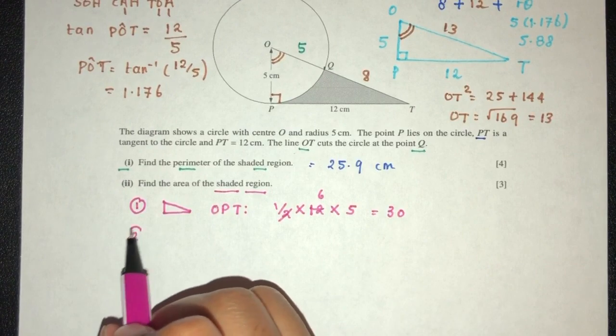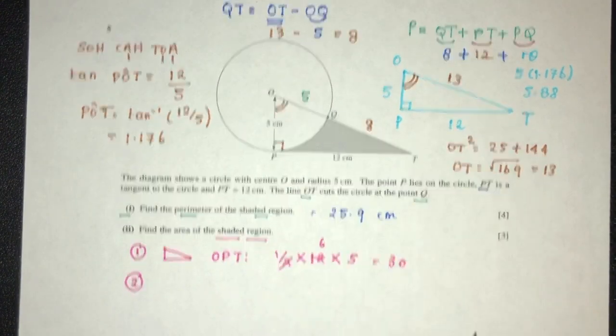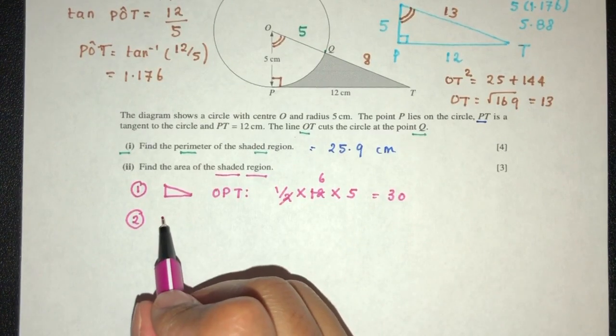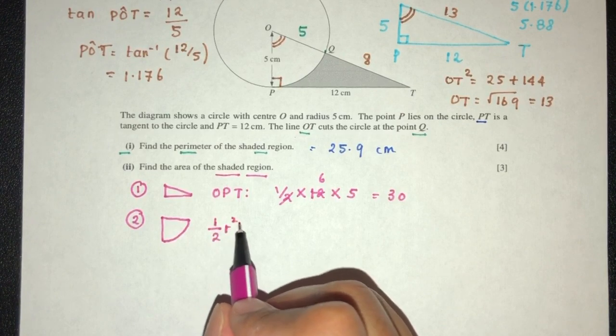Now, second thing, we have to minus the one that we don't want, which is the area of the sector right here. As you guys must know by now, to find the area of sector, we use our formula which is half R squared theta.